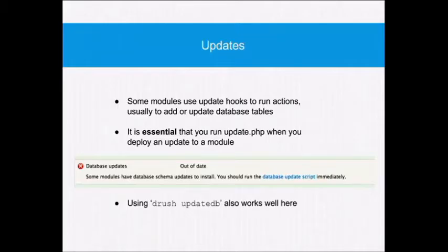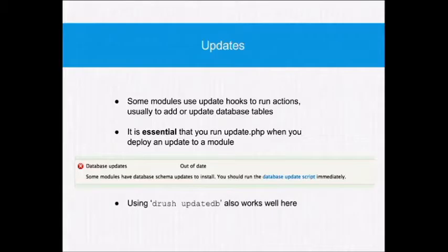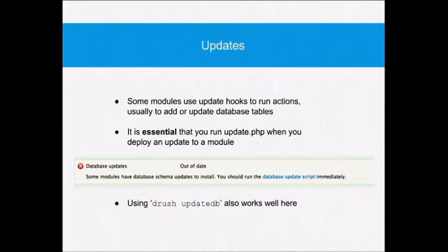Updates. When you're updating a site, you throw your modules in there, but that's not the end of the story. It's essential that you run update.php — or as an alternative, drush updatedb. If you don't do that, you can get problems. For example, if an update for a module adds another column to a database table, and that module then relies on that column being present and you don't run this step, you're going to get weird things going on. This is one of the things we always check for when doing an audit of a rescue job, and it's always, always there — it's probably why it's a rescue job.